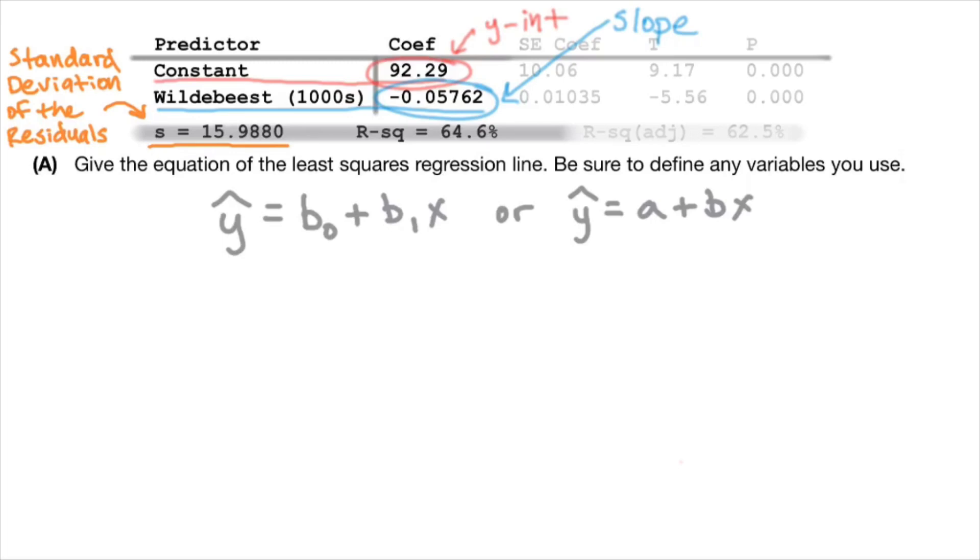So let's fill this in. Let's start with our y variable. If you recall from the first line, we're talking about percent of grass burned. And don't forget, we've got to make sure we have our hat on top of it. That hat represents predicted. So this is the predicted percent of grass burned. Next, we need to write our y-intercept, so 92.29.